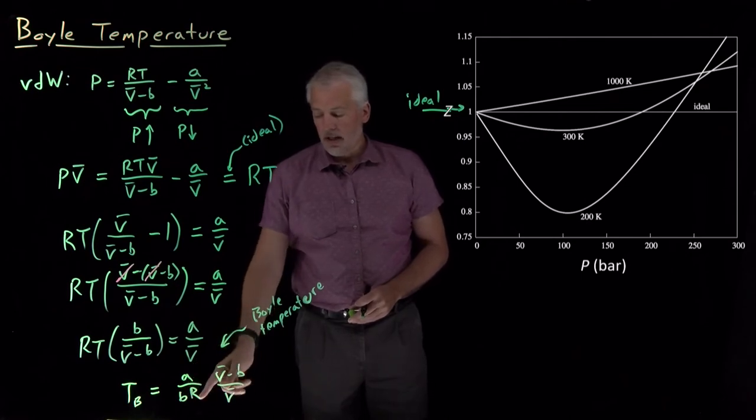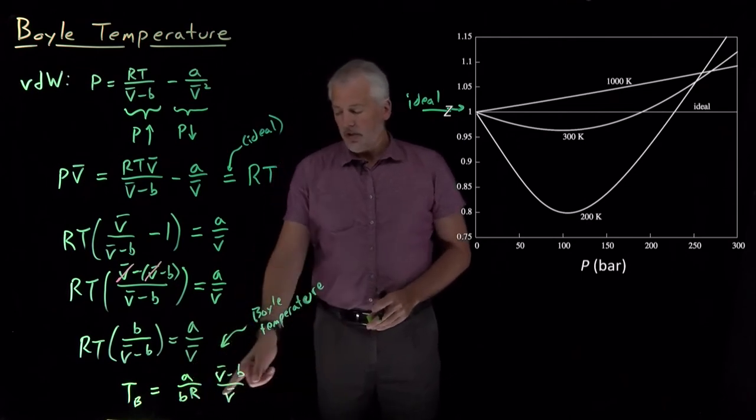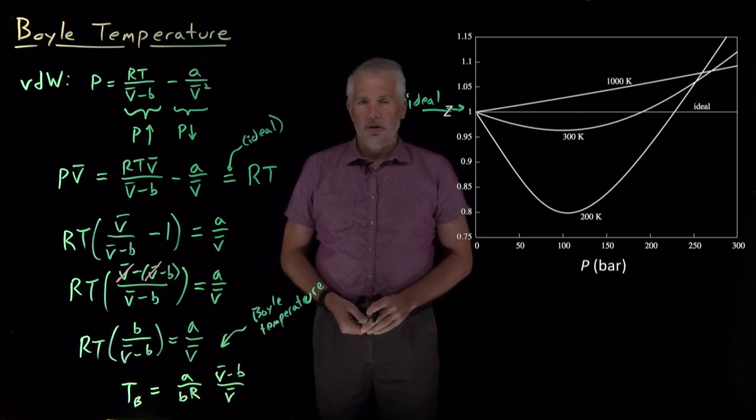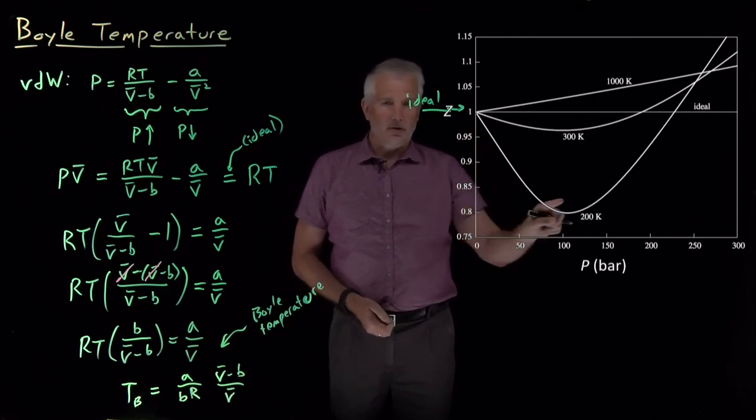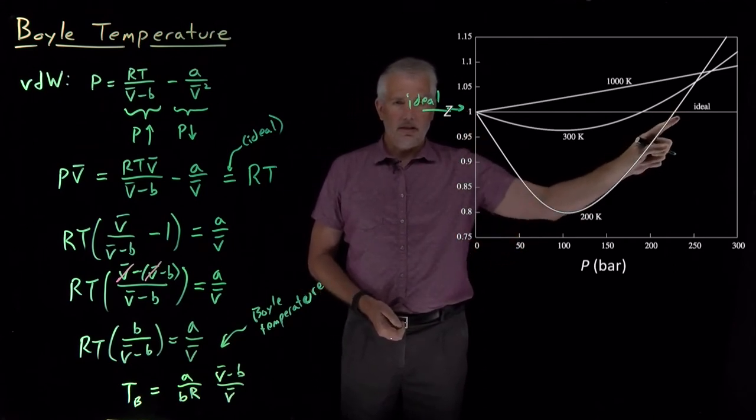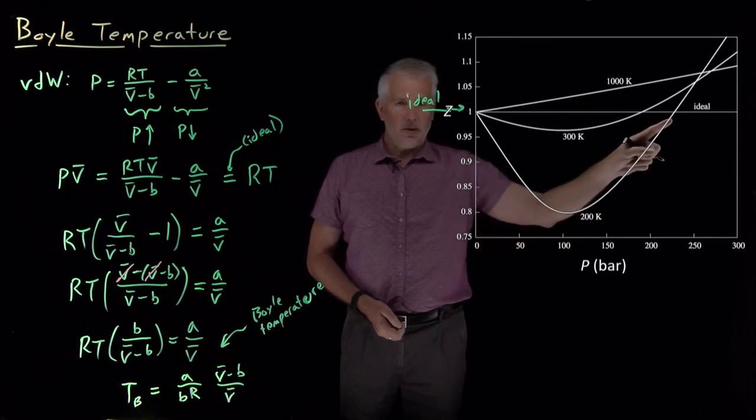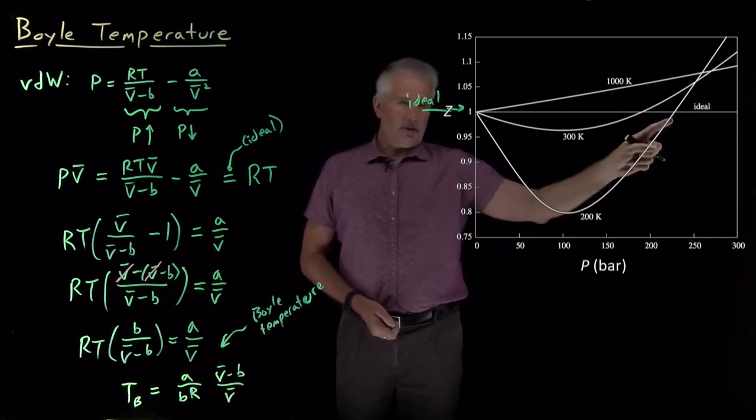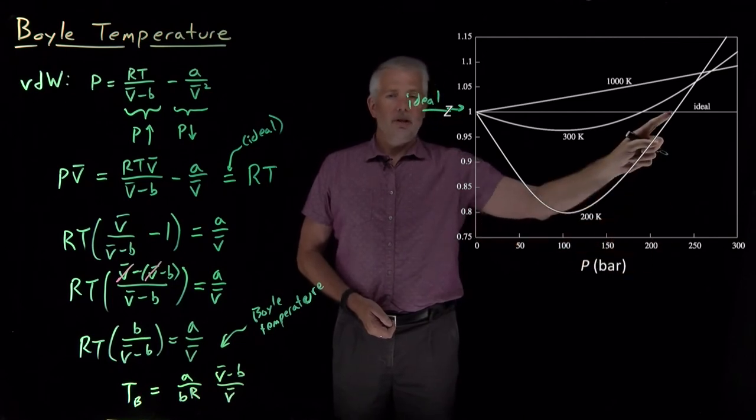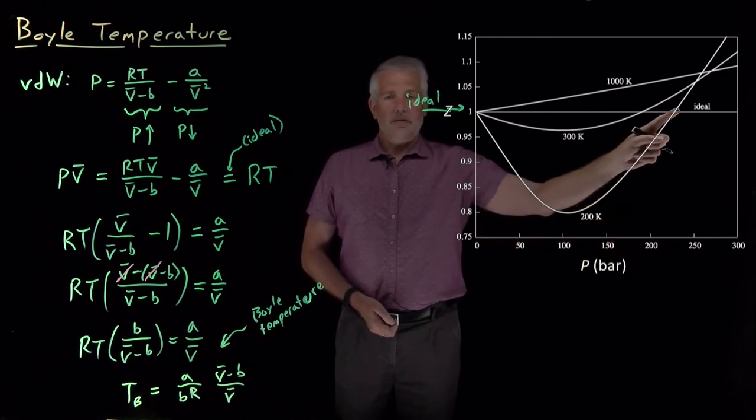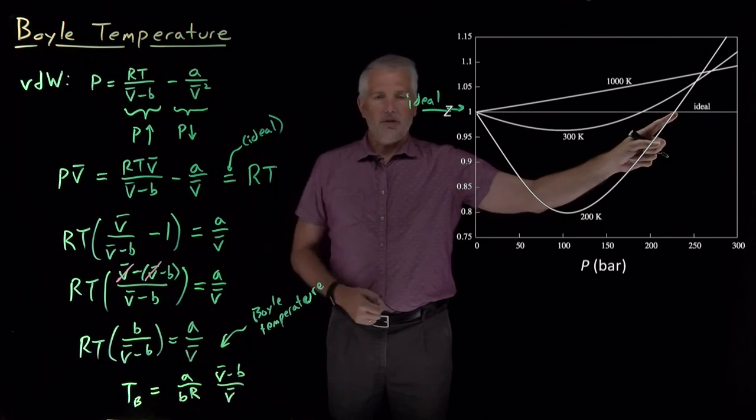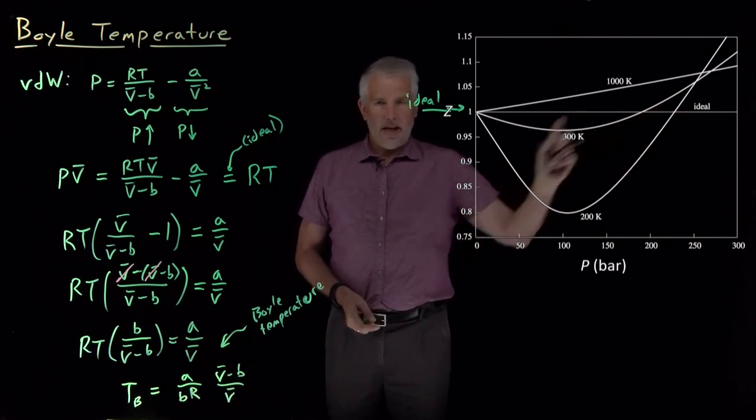If we know A and B and the gas constant, it turns out that depends on the volume. The temperature where any of these curves cross this axis, this 200 Kelvin gas is coincidentally, just for a moment, behaving ideally at a pressure of, let's say, 225 bar because the effects of A and B both cancel each other. But we're not really interested in that.